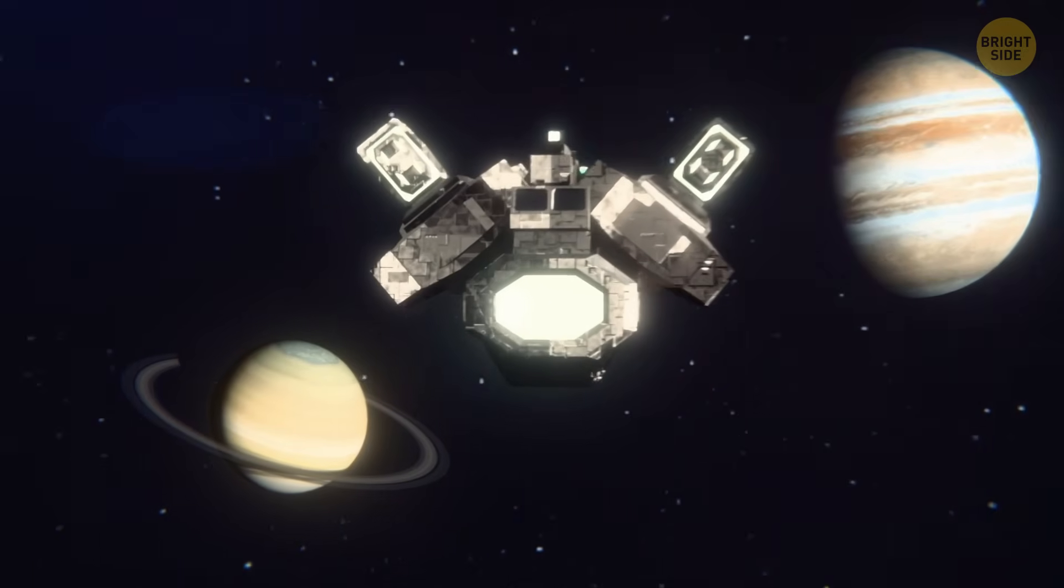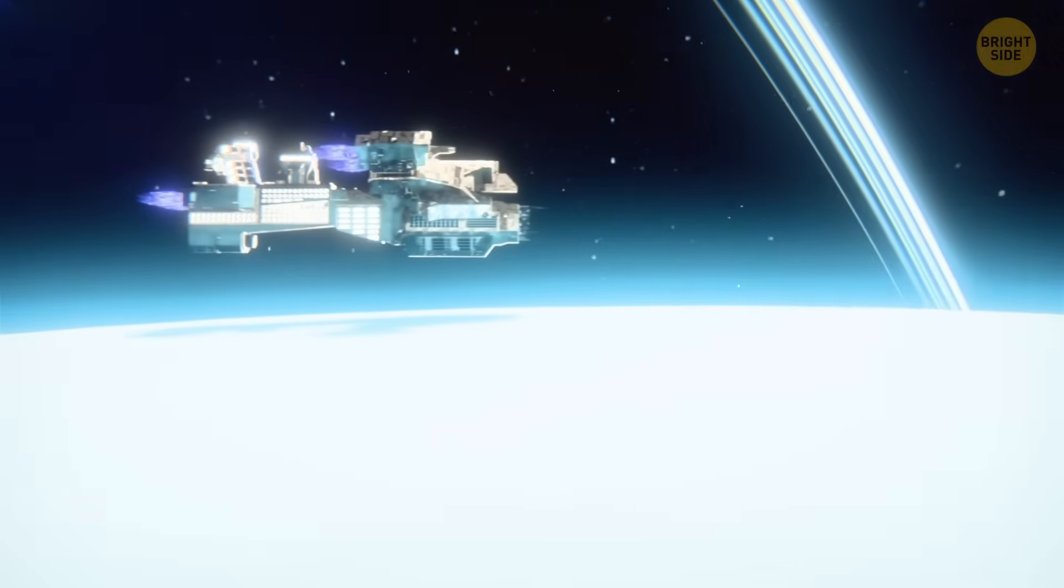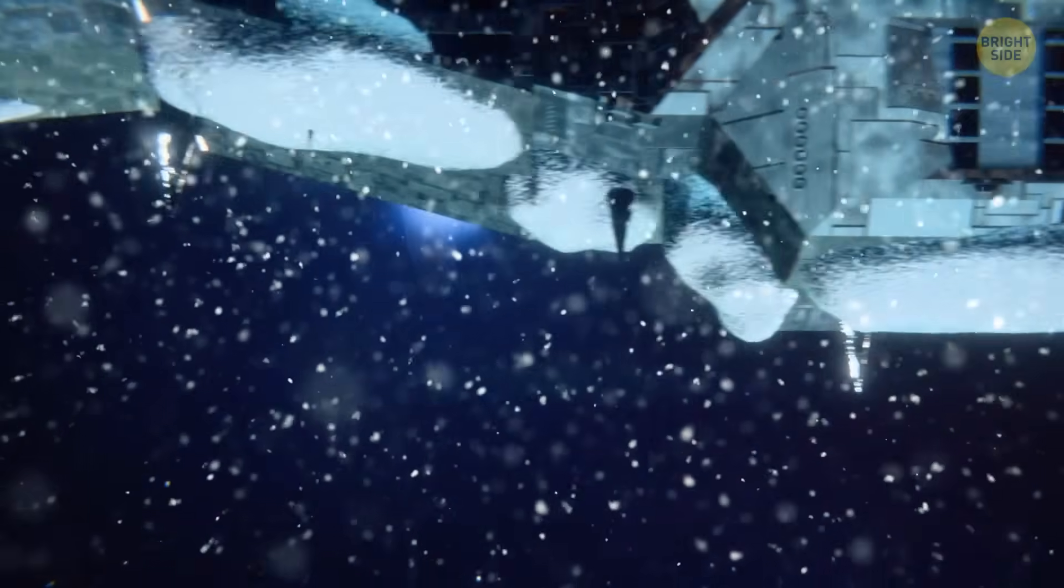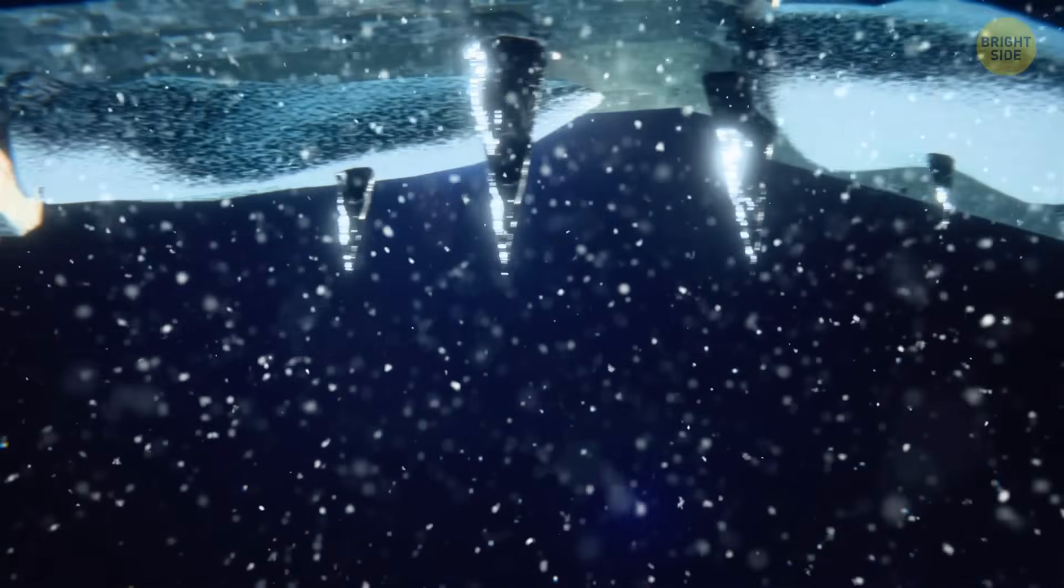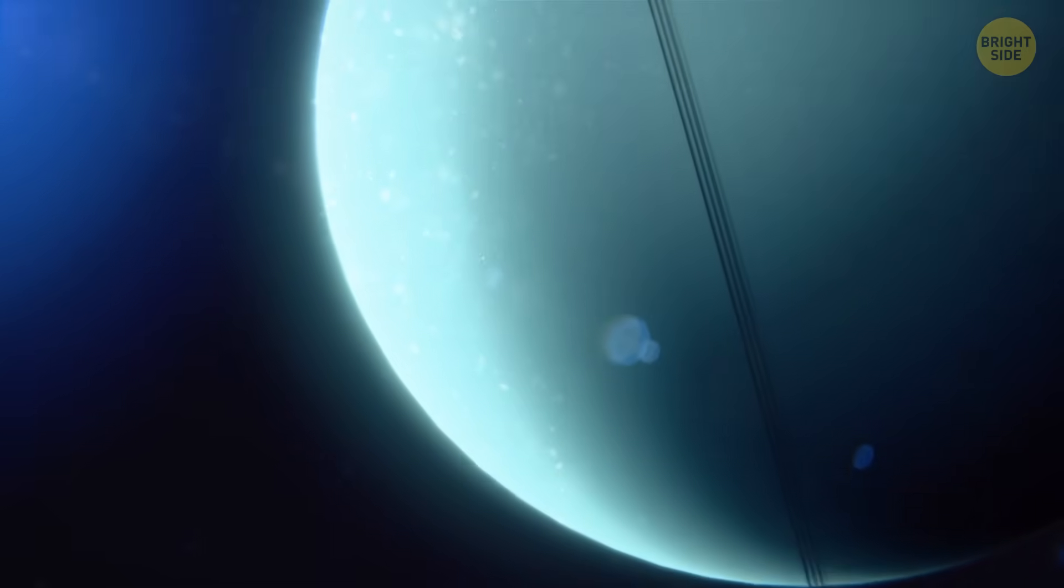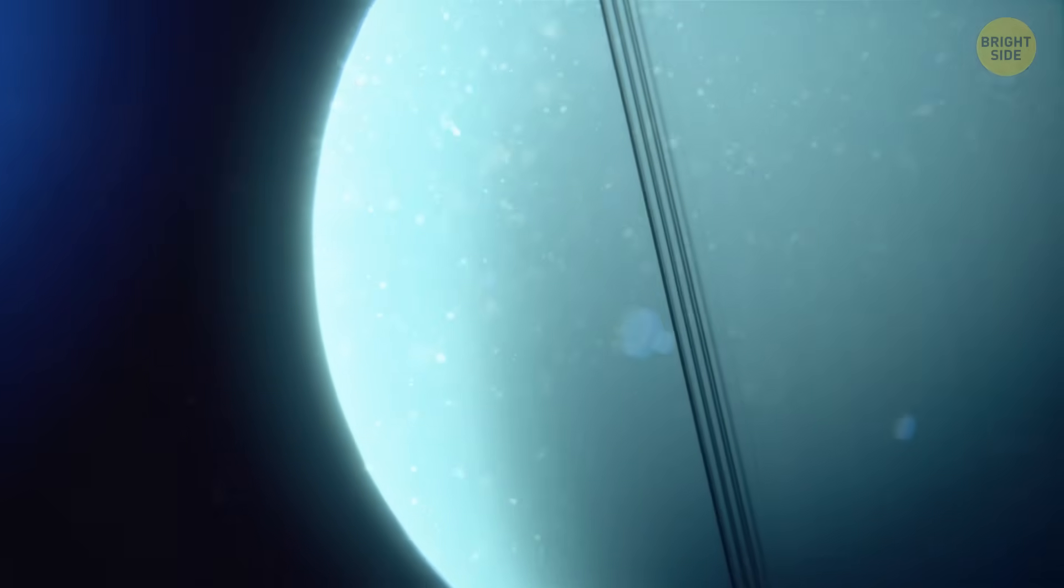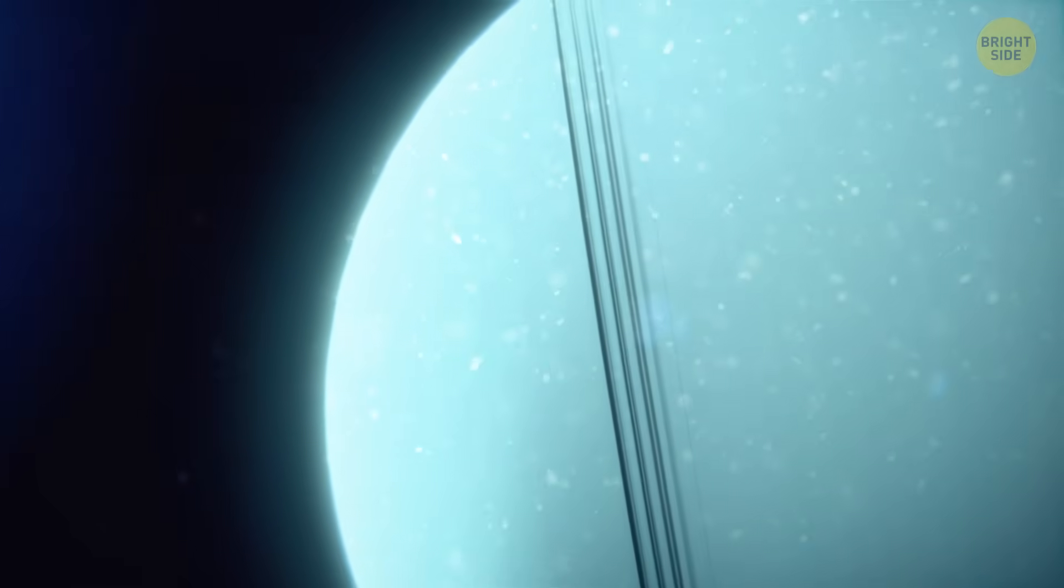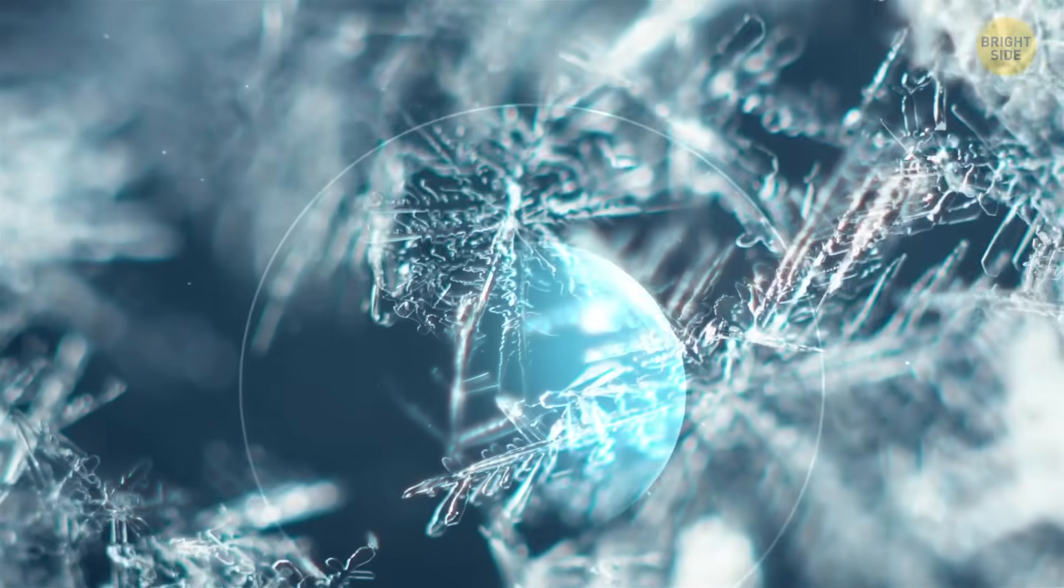And not only is Uranus the coldest planet in our solar system, but the winters there are long. Due to the extreme tilt, it has seasons that last for over 20 years. It's like the planet is stuck in a perpetual state of winter, which is both cool—pun intended—and kind of sad at the same time.